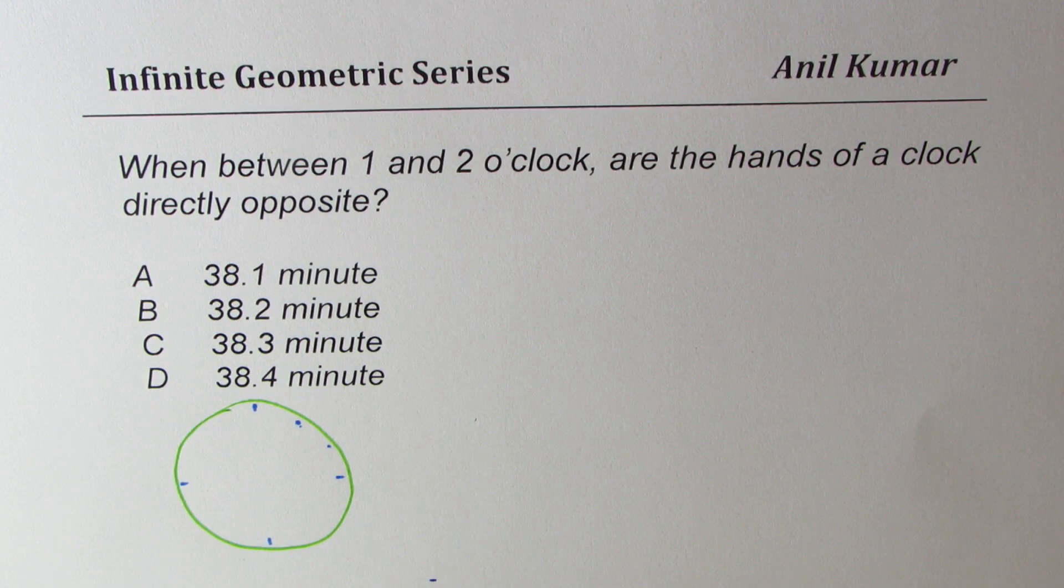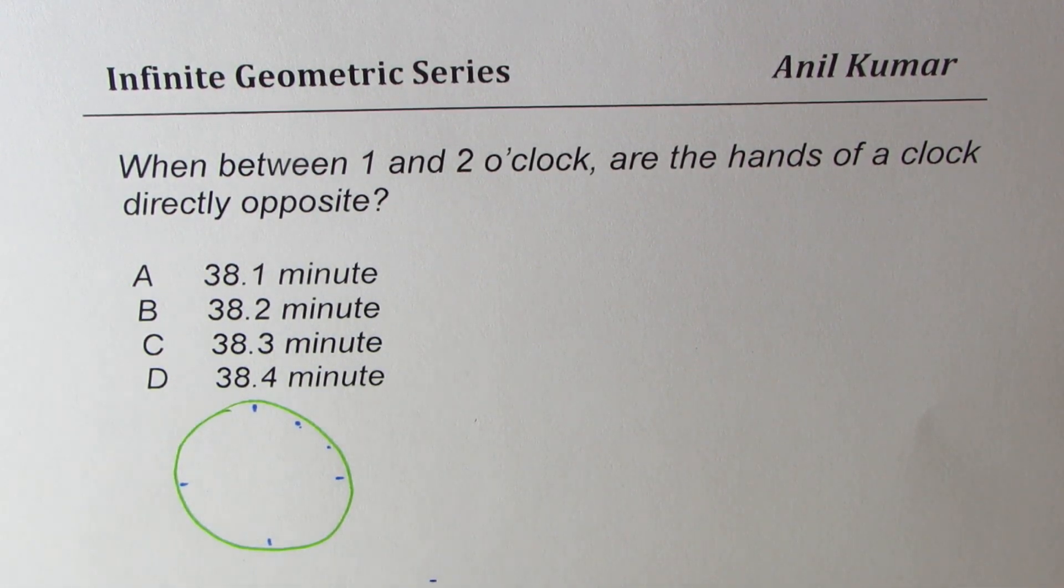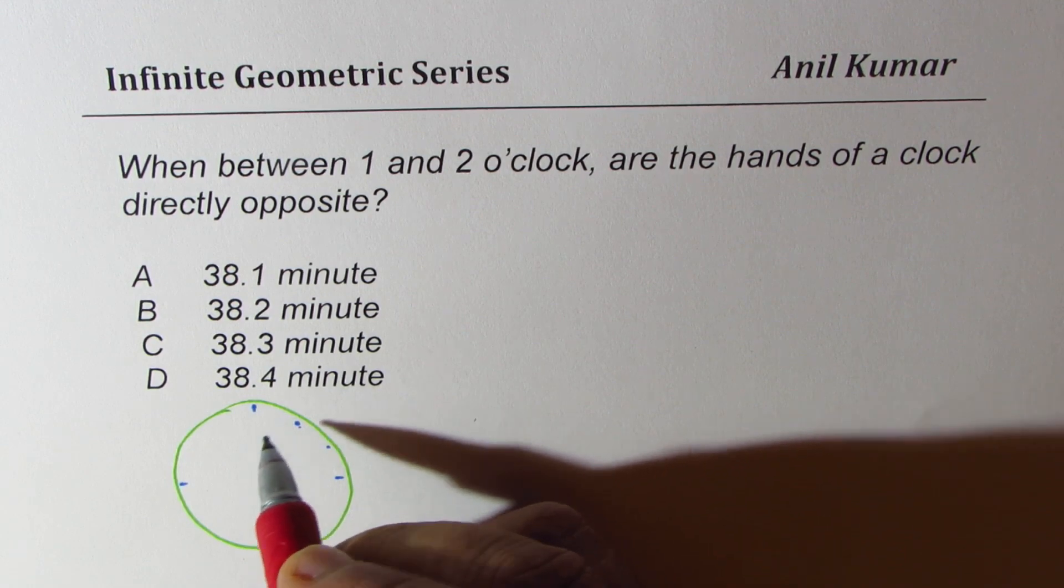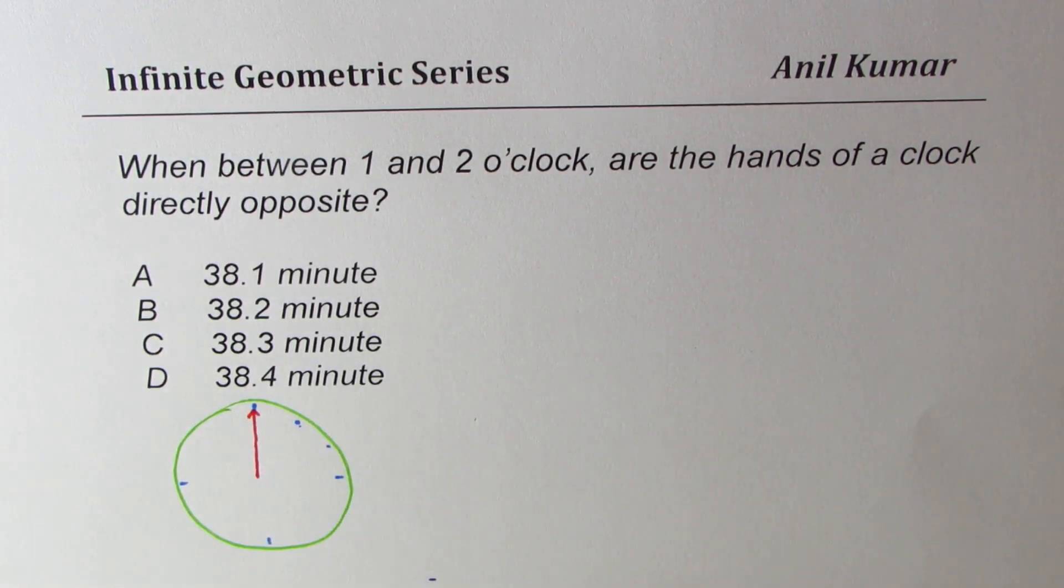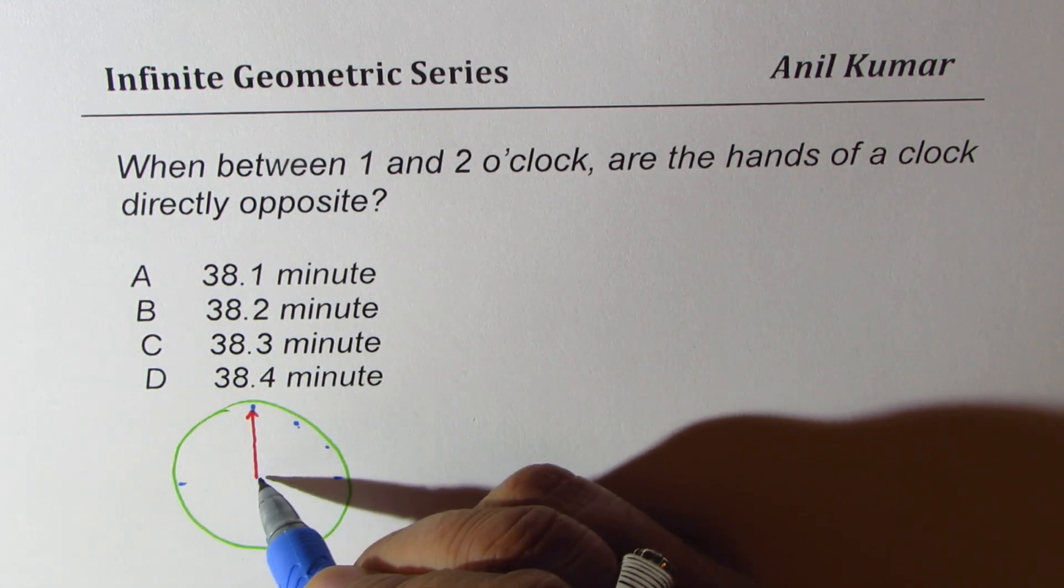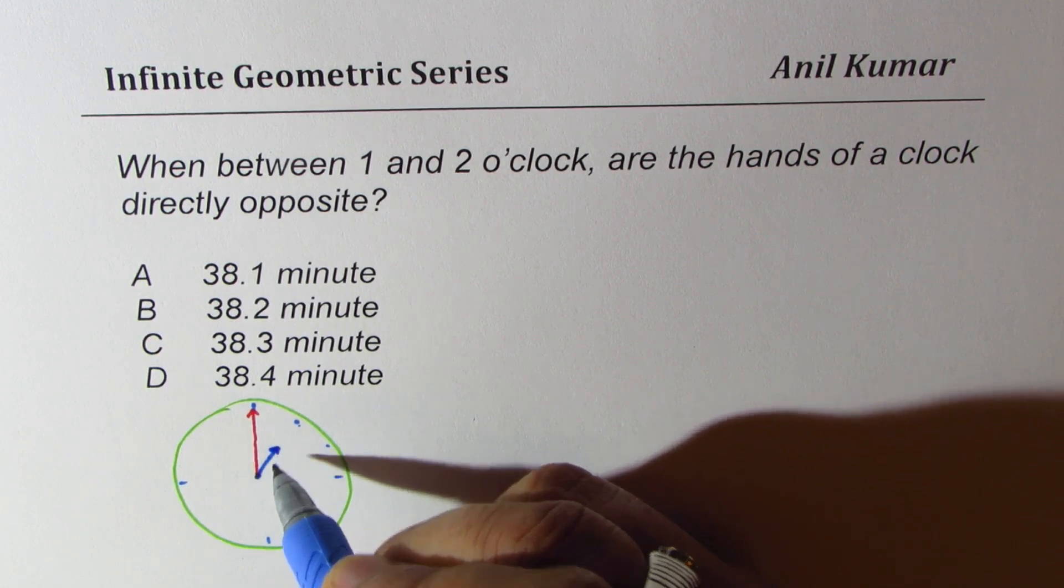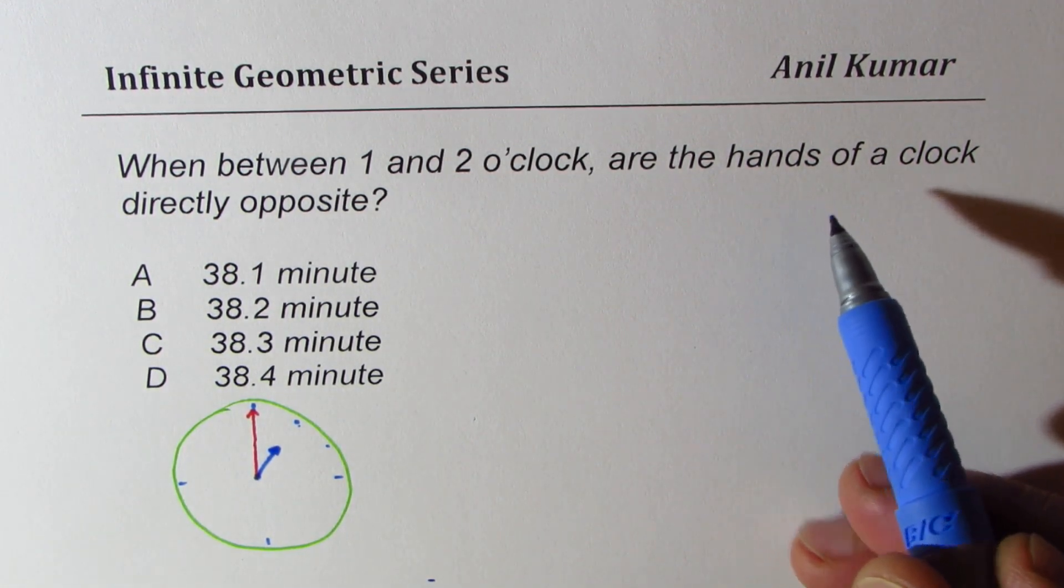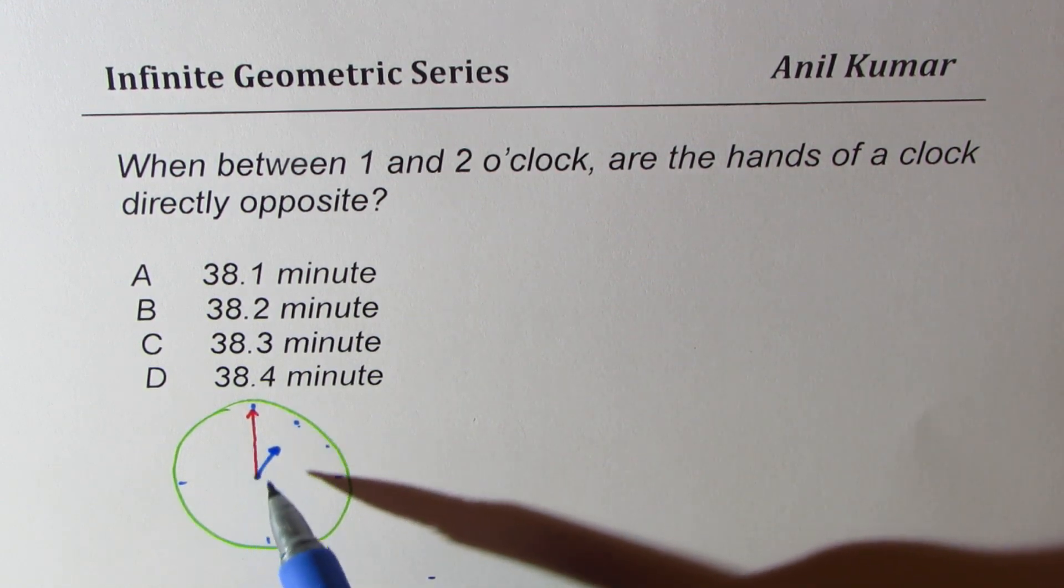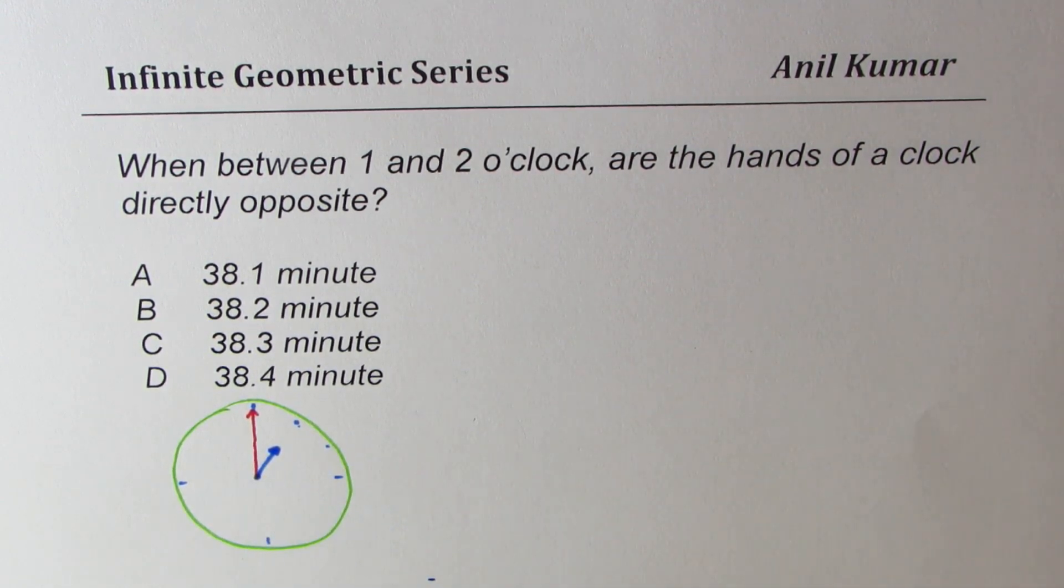So initially, let us assume that the time is 1 o'clock. So in that case, the minute arm will be in this position and the hour arm will be at 1. Now, as the time changes, we look forward for a time when these needles are directly opposite one another.